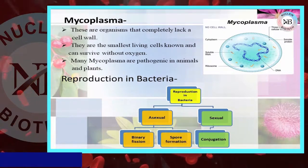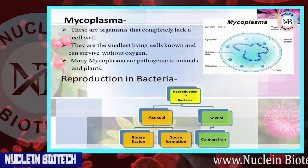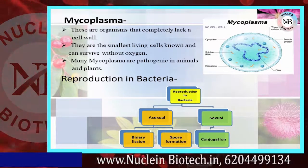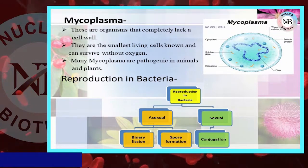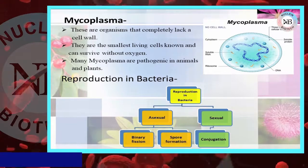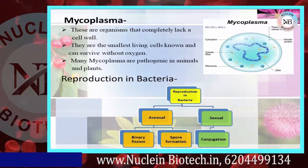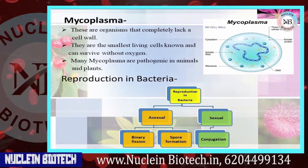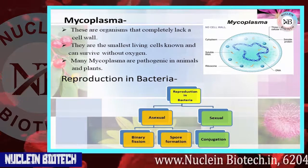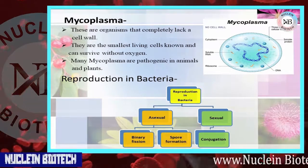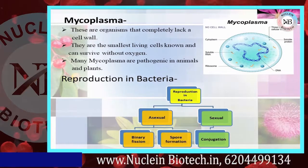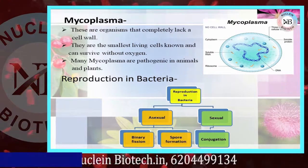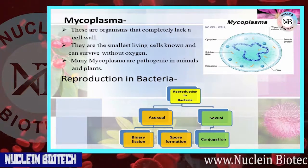In the diagram of mycoplasma, we can see there is no cell wall present. The cytoplasm contains soluble RNA, genetic material DNA, and ribosomes with soluble proteins. A three-layer cellular membrane is present. Mycoplasmas are the smallest living cells known and can survive without oxygen. Many mycoplasma are pathogenic in animals and plants.